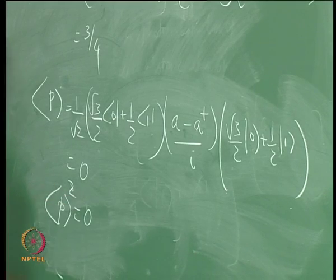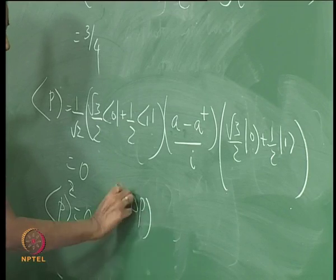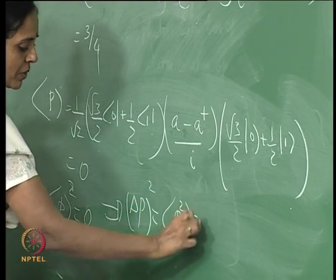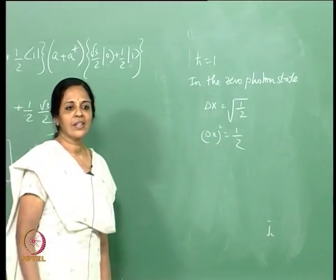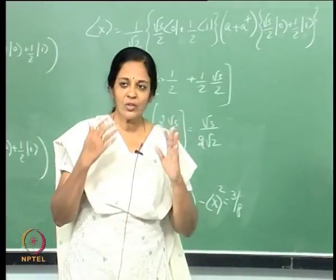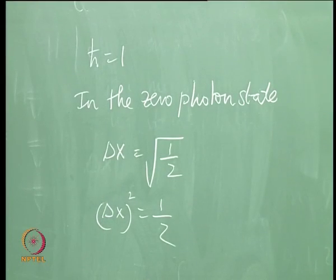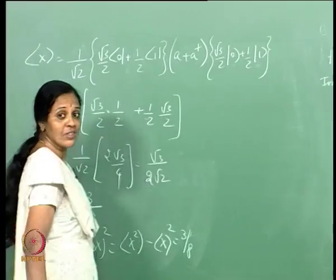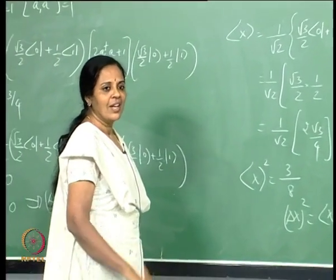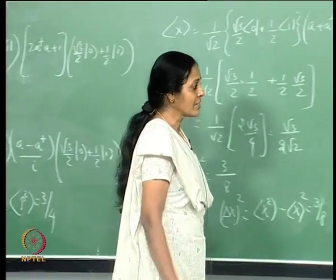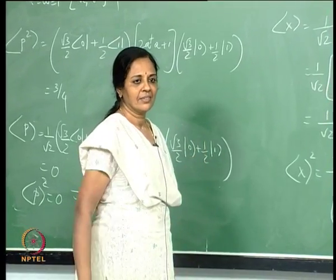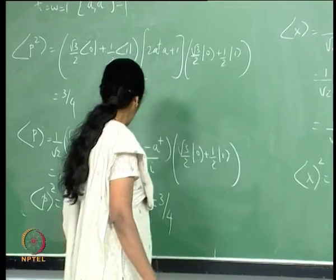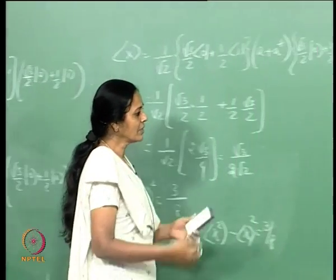Expectation p equals 0 implies delta p squared equals expectation p squared, which equals 3/4. This is greater than 1/2, which is good news. So in the state which is the superposition of the 0-photon state and the 1-photon state: there is squeezing in the x quadrature and no squeezing in the p quadrature, as expected. The product delta x delta p is greater than h-cross over 2, so it is not a minimum uncertainty state but certainly there is squeezing.